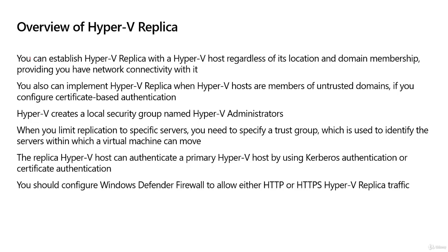Some facts to keep in mind about the Hyper-V replica. You can create a replica with another Hyper-V host regardless of its domain membership — it could be in a completely separate domain, a completely separate forest, or even in a workgroup. It's not required that they be a member of the same domain; they simply have to have a network connection between the primary and the replica.